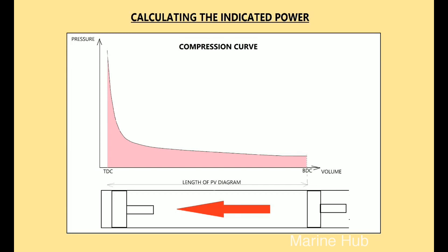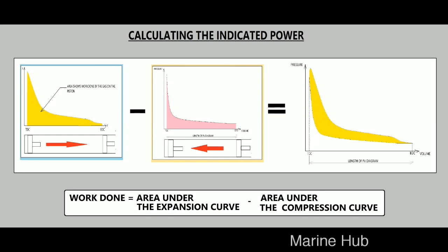When the piston travels from BDC to TDC, it is compressing the charge air. Here the piston is doing work on the charge air. The actual work done obtained per power stroke of the engine is given by the difference of the area of expansion and compression curve.